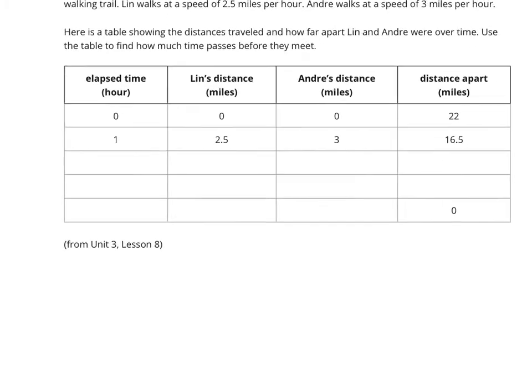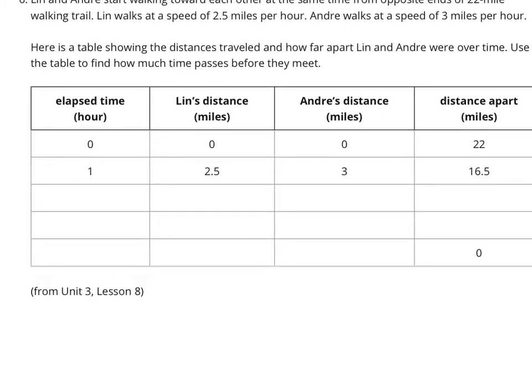If we zoom in on our table here, we're going to count our hours up by 1. So, 0, 1, 2, 3, and 4. We can look here, and Lynn's distance is going to increase by 2.5 miles every hour. So, if we just add 2.5 to 2.5, we get 5 miles. He's traveled then 7.5 miles. If we add 2.5 and add 2.5 again, you get 10.